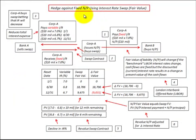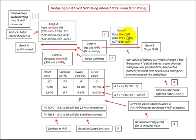Here we're going to look at a hedge against the fixed notes payable using an interest rate swap. Corp A issues a notes payable, and Bank B buys this notes payable. Corp A is going to pay a fixed interest rate on this notes payable — in our case, $10 million. At the same time, Corp A buys an interest rate swap, and Bank A sells the swap to Corp A.